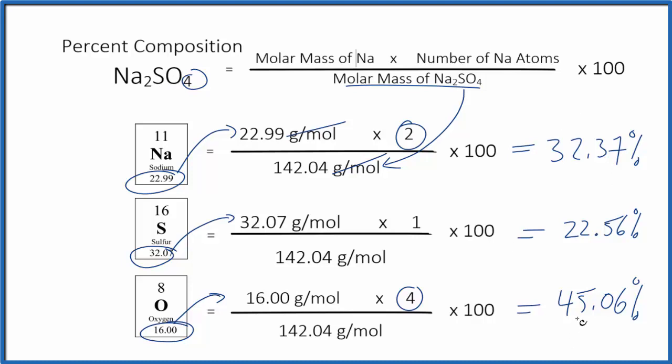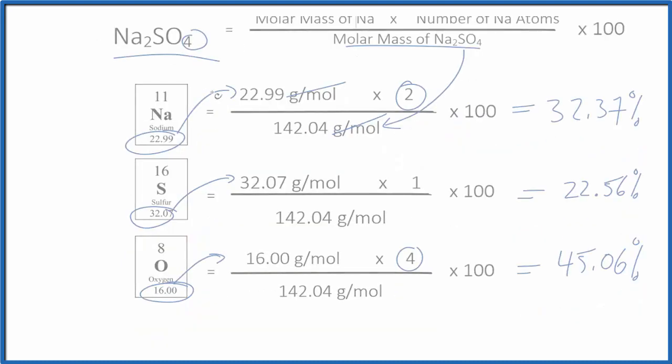All of these numbers, they should add up to very close to 100. These look like they add up to 99.99%, which is acceptable. This is Dr. B with the percent composition for Na₂SO₄, sodium sulfate. Thanks for watching.